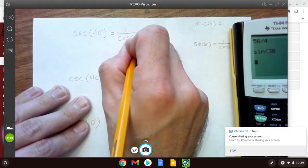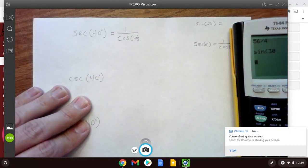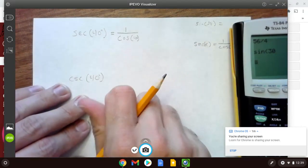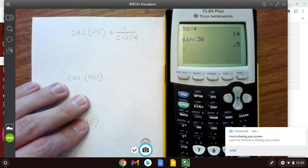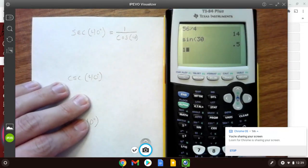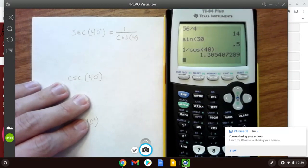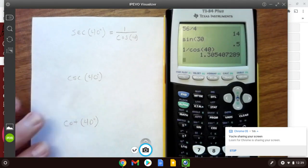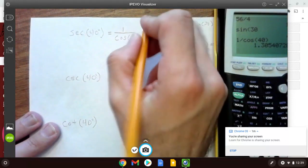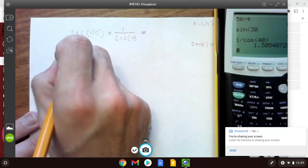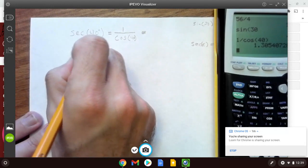That's what you would type in the calculator - just type in 1 divided by cosine of 40. It gives you this large irrational number, 1.305.